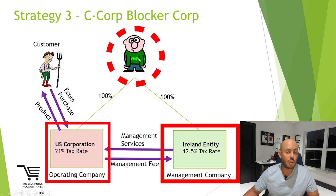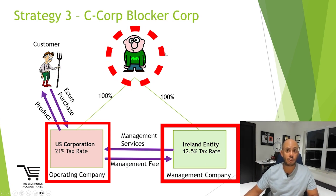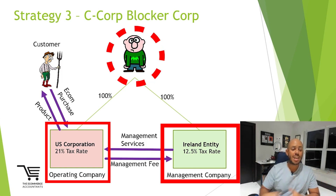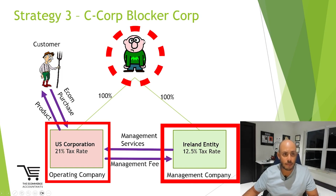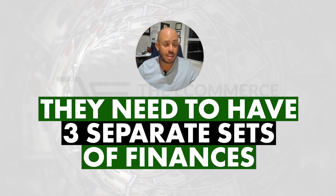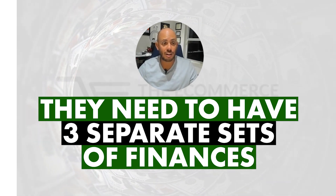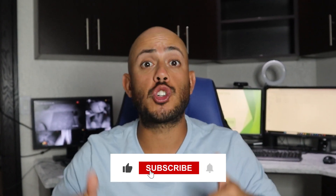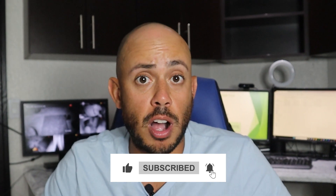Just like you as an individual have your own bank accounts and credit cards — you and your friends don't share bank accounts — think of these as three separate people. They need to have three separate sets of finances. That concludes our two-part series for tax planning for foreign e-commerce entrepreneurs. Thank you so much for sitting through both videos. If you find our content valuable, smash that like button and subscribe. We're truly grateful, and we hope to see you on the next one. Take care, guys.